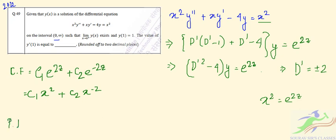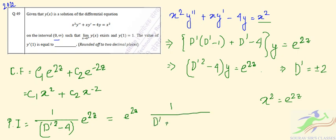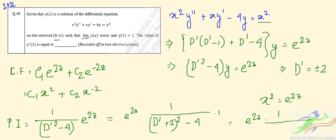Now, what will be the particular integral (PI)? It will be 1/(D'² - 4) of e^(2z). If we put 2 in, the denominator becomes 4 - 4 = 0, so we need to use a different approach. We can write this as 1/[(D' + 2)² - 4] of e^(2z), then simplify to 1/(D'² + 4D') of e^(2z), which factors as 1/[D'(D' + 4)] of e^(2z).